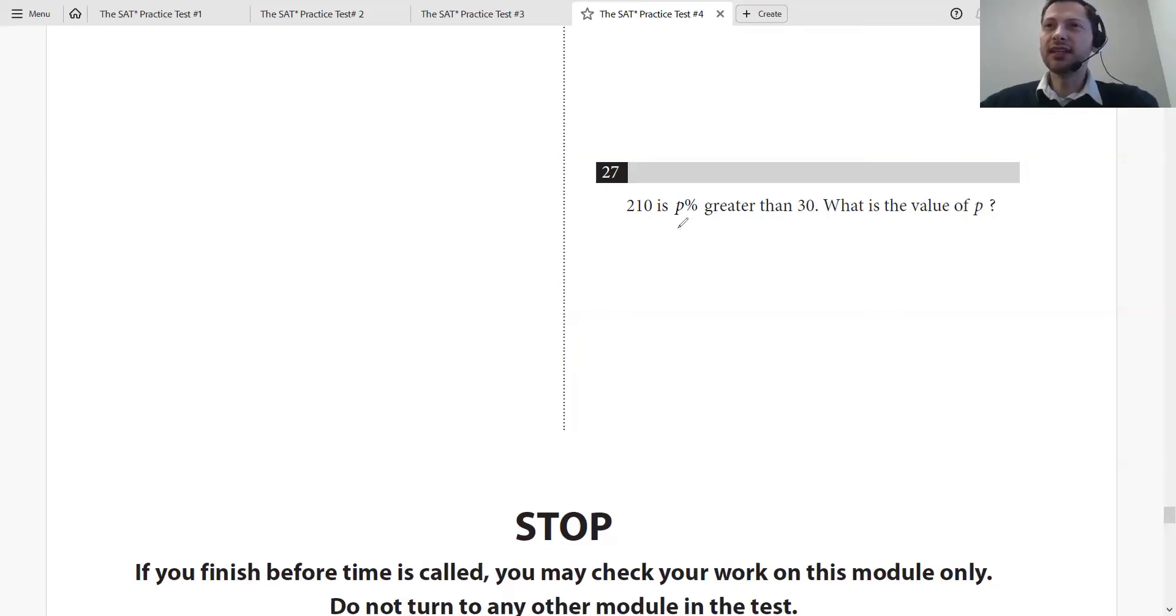Let's understand that. So 210 is p% greater than 30. Let's try: 210 equals x times 30, where x would be how much we're increasing it by. Let's solve for x and see what it is. You're multiplying something by 30.